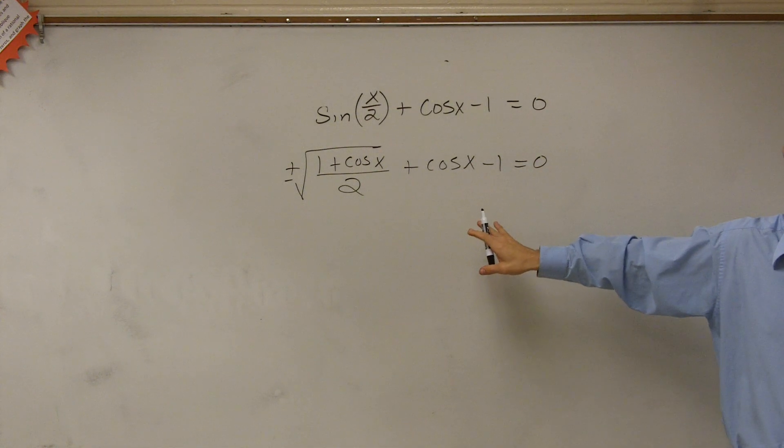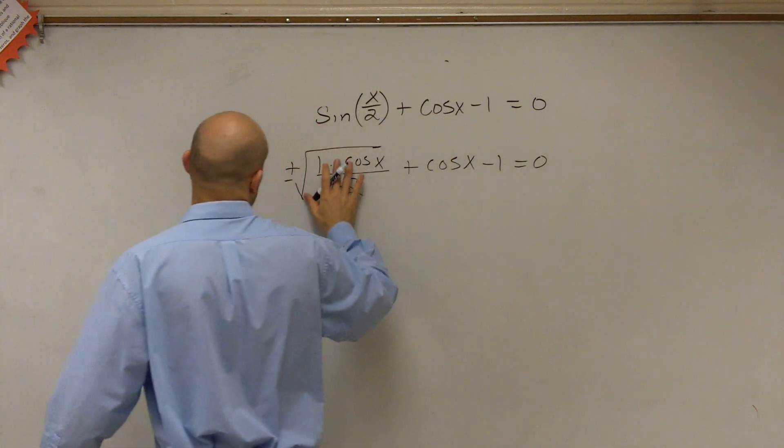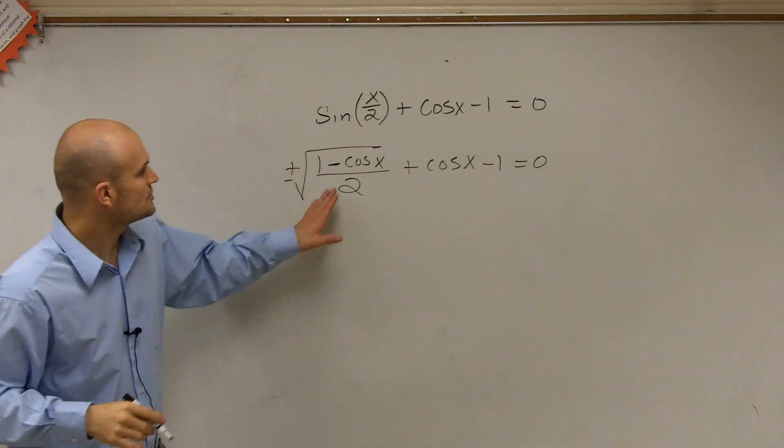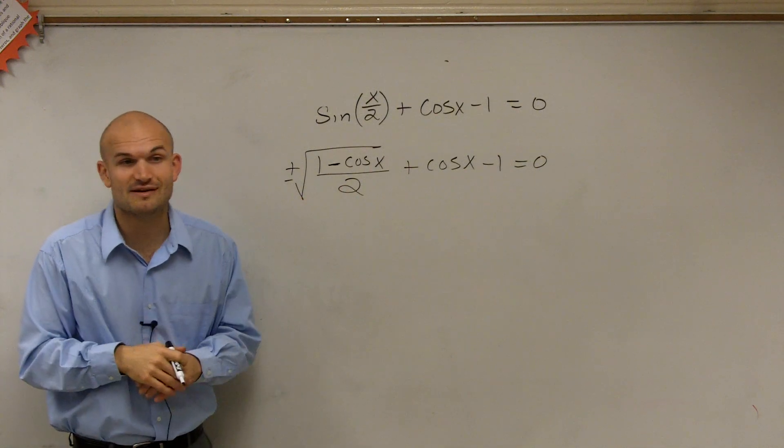Are we good in the formulas? I guess I'm just going to say that's what I was asking. Are you going to confirm? Yeah. Okay. Minus. Okay. So I just want to make sure. All right. So we have plus or minus the square root of 1 minus cosine of x divided by 2 plus cosine of x minus 1.